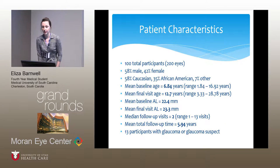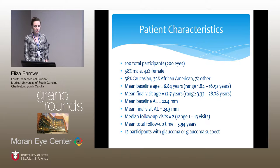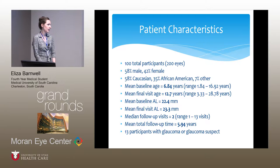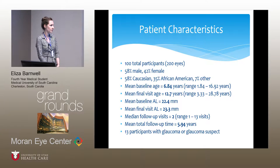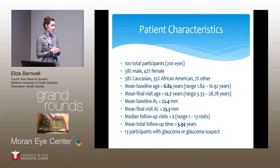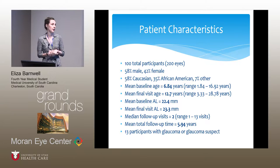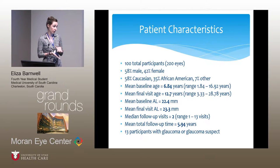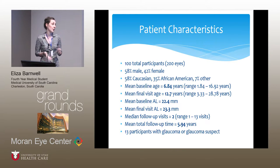Here are some of the patient characteristics. We had 100 total participants, or 200 eyes — 58% were male, 42% female; 58% were Caucasian, 35% African American, and 7% other. The mean baseline age was 6.8 years and the mean final visit age was 12.7 years. The mean baseline axial length was 22.4 millimeters and the mean final axial length was 23.3 millimeters. The median number of follow-up visits was 2, with a range from 1 to 13, and total follow-up time was about 6 years.